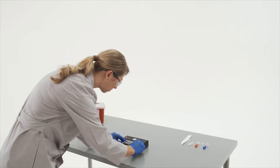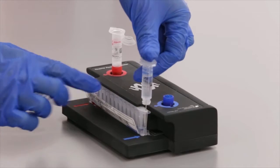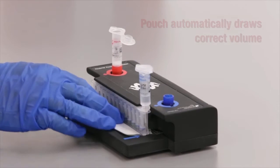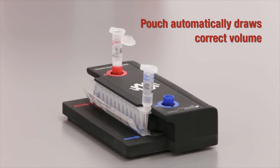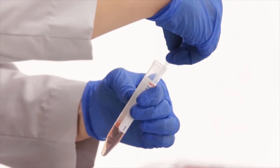To begin a FilmArray run, the pouch is first placed into the loading block. Then, hydration solution is injected into the pouch through the blue inlet port on the right. The vacuum in the FilmArray pouch automatically draws the correct volume, eliminating the need for precise measuring and pipetting.